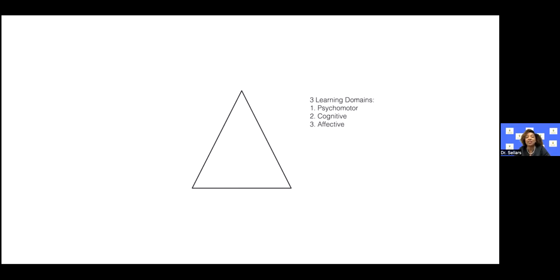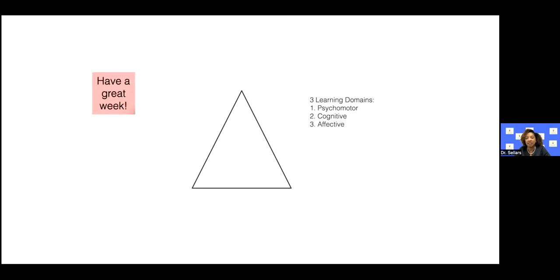As a refresher, the three learning domains are: psychomotor, cognitive, and affective — if you guessed affective, you are correct. You can also draw on your whiteboard, and if drawing clean shapes is tough, you can use the automated shapes feature. There's also a sticky note feature — you can change the color — making learning a little more fun and engaging for adult learners.